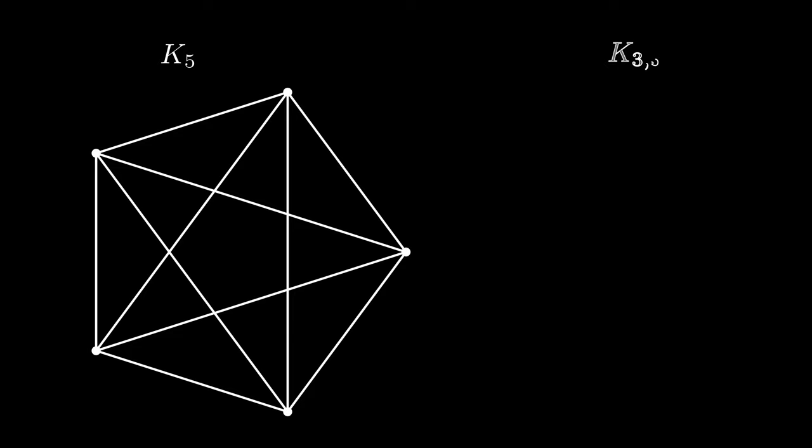On the left here we have K5, which is the complete graph on five vertices. This means that there's an edge between any two vertices.